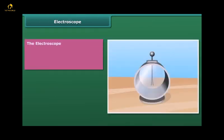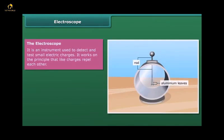The electroscope: It is an instrument used to detect and test small electric charges. It works on the principle that like charges repel each other.